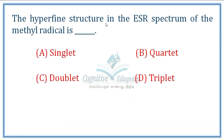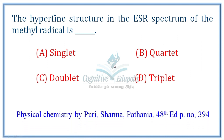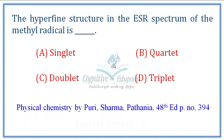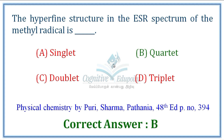Next question: The hyperfine structure in the ESR spectrum of the methyl radical. Using the formula (N + 1) or (2NI + 1) with 3 equivalent hydrogen atoms (I = 1/2): (3 + 1) = 4. The result is a quartet. Correct answer is B.